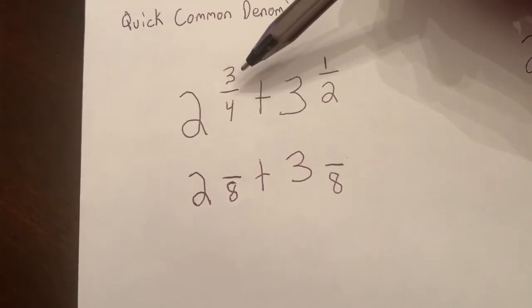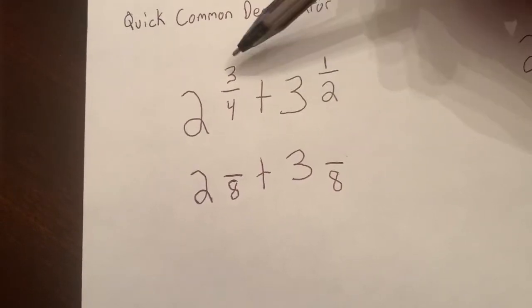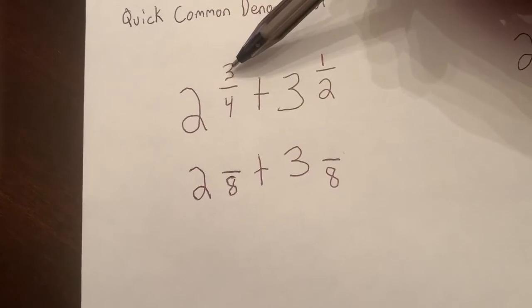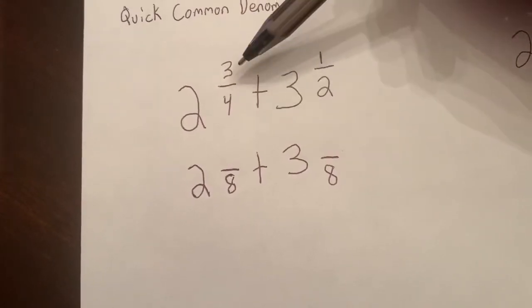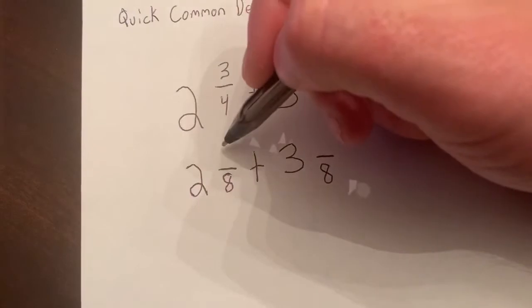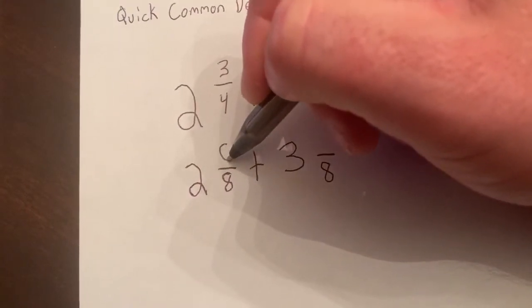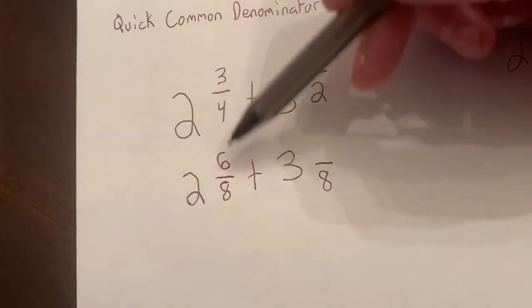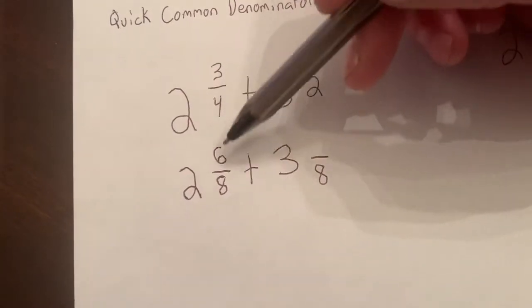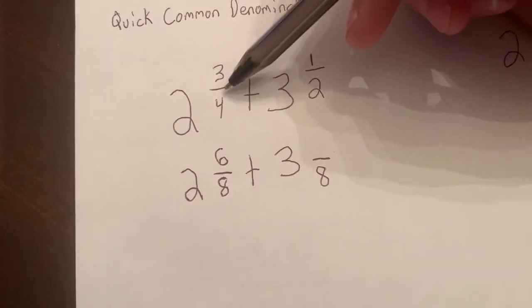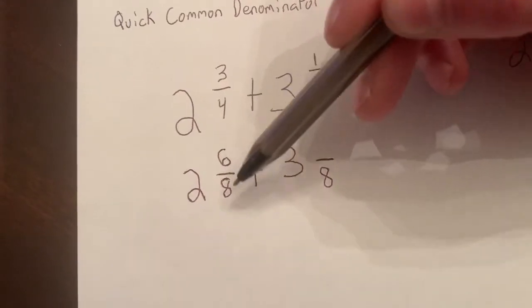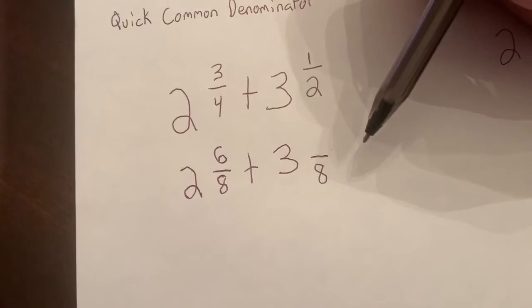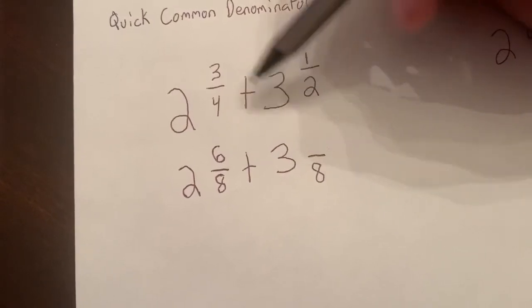Now the nice thing about QCD is we can go ahead and cross multiply to get the numerators. So 3 times 2 is 6, we just drop that straight down. Remember, gravity drops it straight down. So what we did there is 3 fourths is now 6 eighths - these are equivalent fractions.